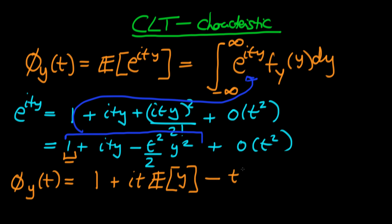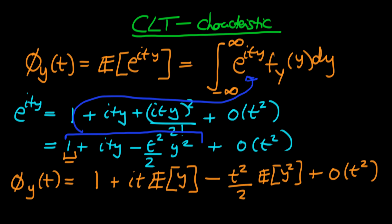The third term gives minus t²/2 times the integral of y² times the probability distribution, which is the expected value of y² — the second moment of the distribution. Higher order terms are denoted as stuff of order t². Written this way, the characteristic function is clearly a moment generating function: its consecutive terms correspond to E[y], E[y²], E[y³], representing the moments of the distribution.